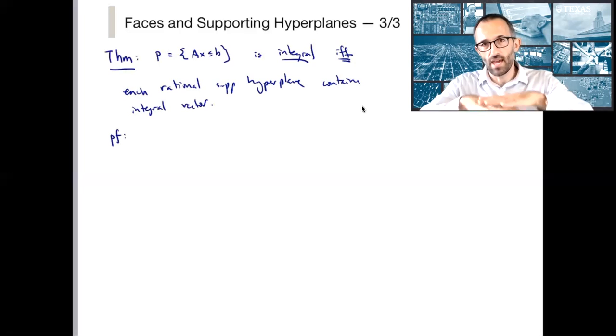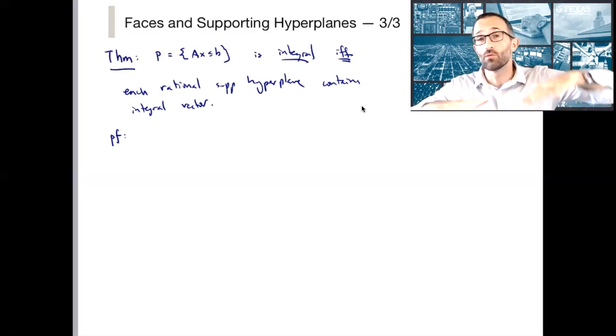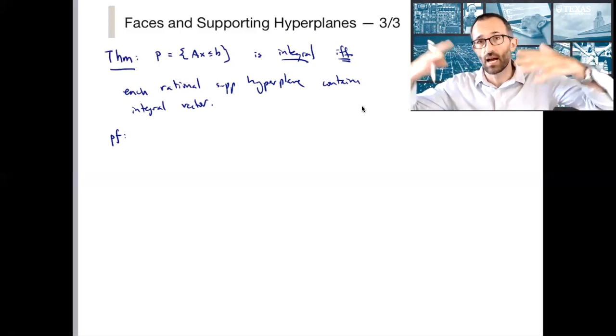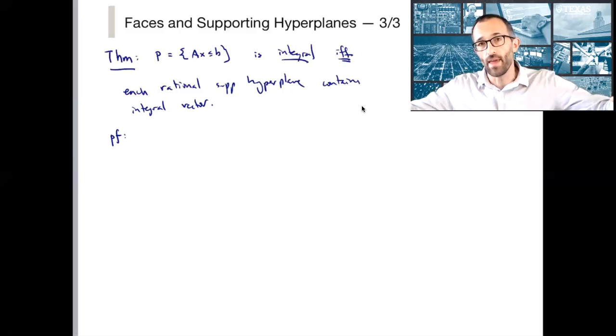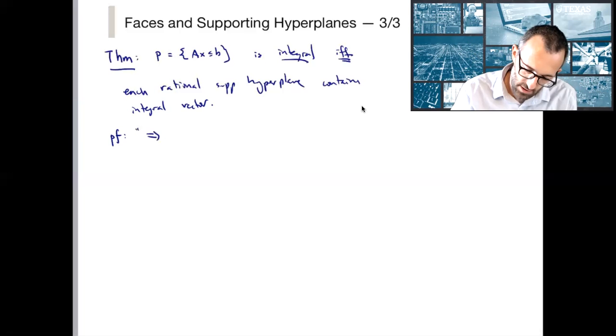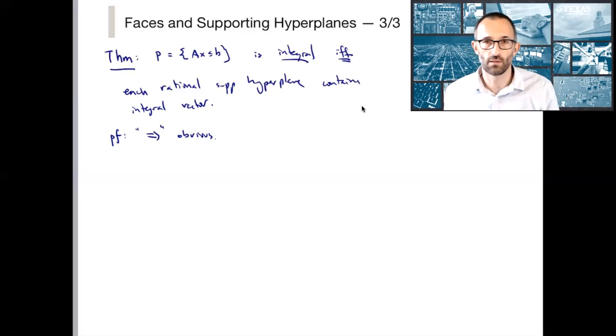So what does that mean? It's saying that if h is a supporting hyperplane, it's a hyperplane that touches p, either at a corner or at an entire face, and p lies on one side of it, then somewhere on h, somewhere on that hyperplane, possibly not in p, h has an integral vector. So one direction is obvious. Namely, if p is integral, well, if p is integral, it means all of its extreme points are integral. And that means that any supporting hyperplane is going to contain at least one extreme point. So that direction is obvious.